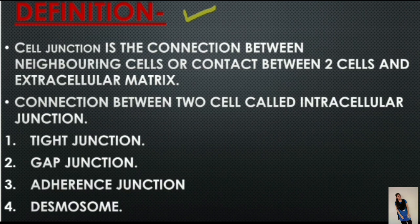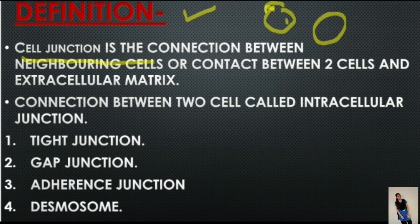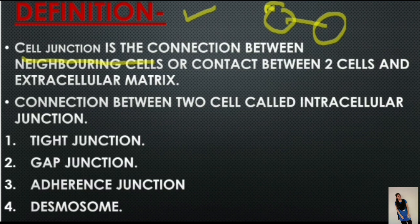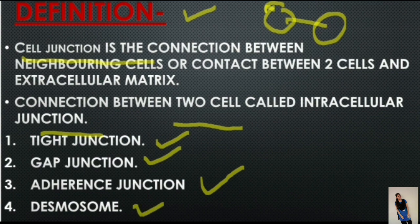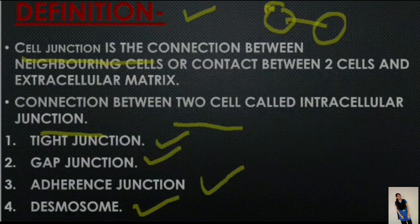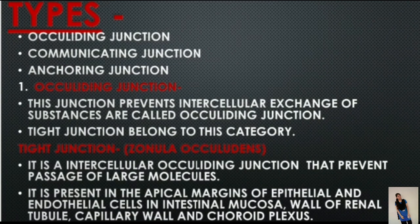Cell junction is a connection between neighboring cells, or contact between two cells and extracellular matrix. Connections between a cell and extracellular matrix are focal adherence or hemidesmosome. The connection between two cells is known as cell junction. Connections between two cells are called intercellular junctions — like tight junction, gap junction, adherence junction, and desmosome. These are the four types of intercellular junction.